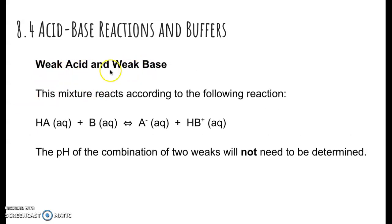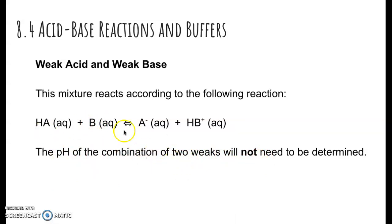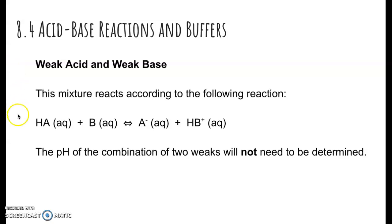The last situation — weak acid and weak base — you don't have to worry about the pH calculations. You could use Ka and Kb values to figure it out, but we don't need to do that here. Most of the pH calculations, including the Henderson-Hasselbalch equation, will be covered a couple of sections down the road. That's all for the 8.4 notes. Have a good day.